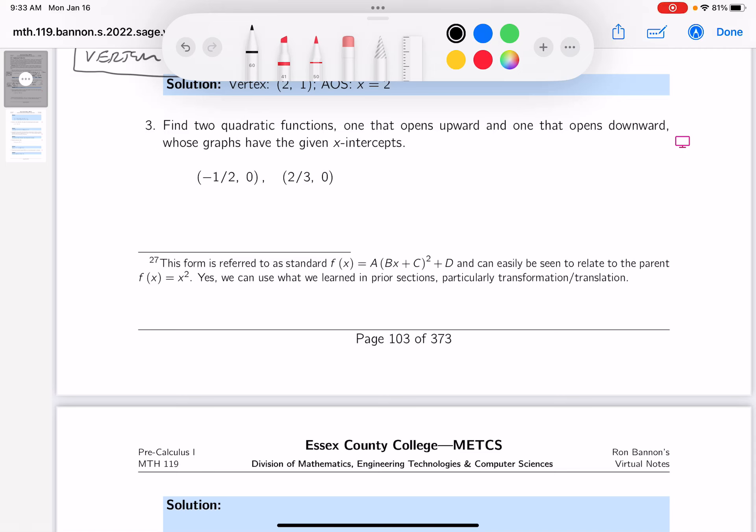Okay, this is fine. Two quadratics, one that opens upward and one that opens downward, whose graphs have the given x-intercepts.